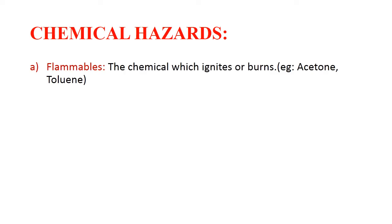Chemical hazards — these are of various types. To start with, flammables: chemicals which ignite or burn. Examples include acetone and toluene. The container is marked with a specific logo if it falls under the category of flammables.